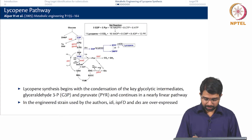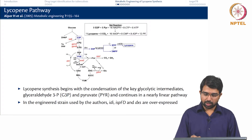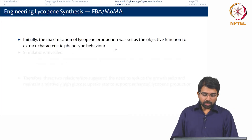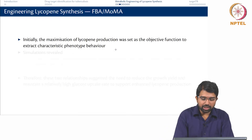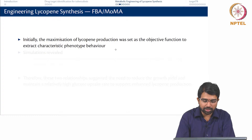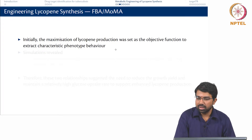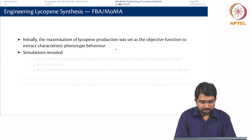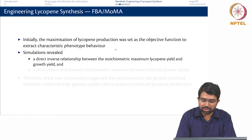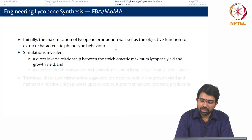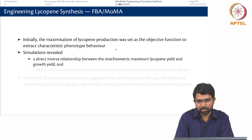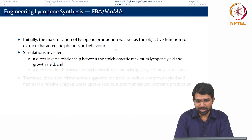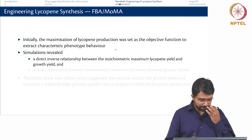This is the important sub-branch that goes towards lycopene — you overexpress all of these. Initially, what they did was they tried to maximize lycopene production as the objective function. They found that there is a direct inverse relationship between stoichiometric maximum lycopene yield and growth. This is not a growth-associated metabolite: higher the growth, lower the lycopene; lower the growth, higher the lycopene.